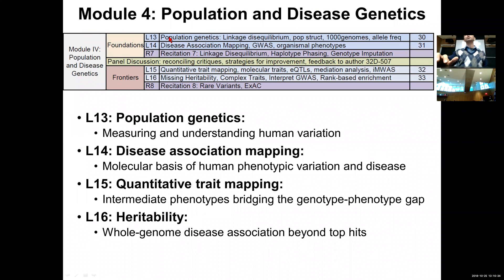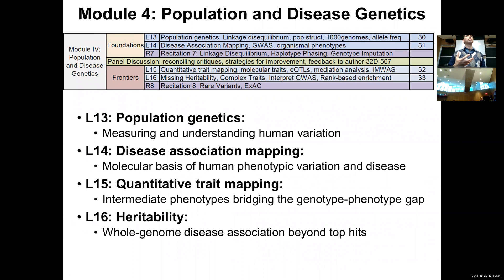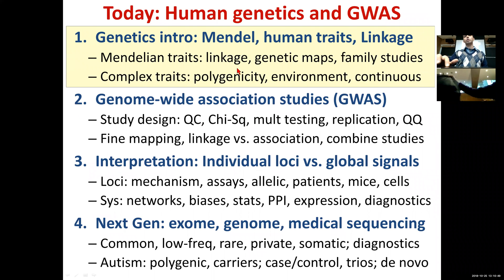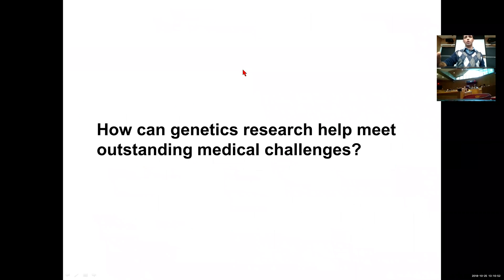On Tuesday we talked about population genetics, and this is the foundation on which we're building — how does human population structure dictate the genomic properties we're going to have at genetic loci, and how does that allow us to carry out strategies for discovery.